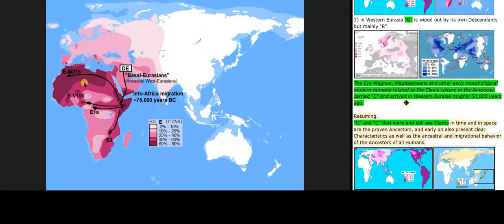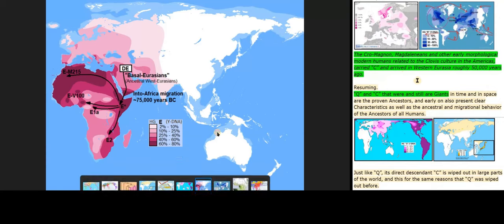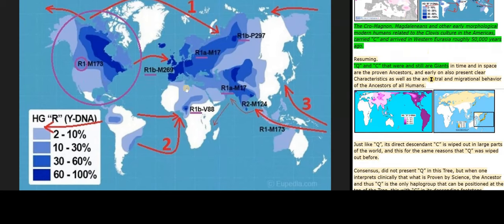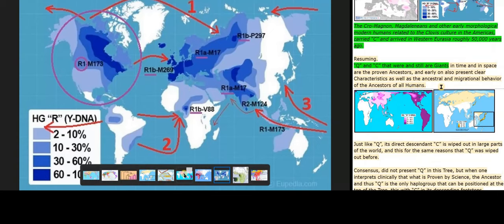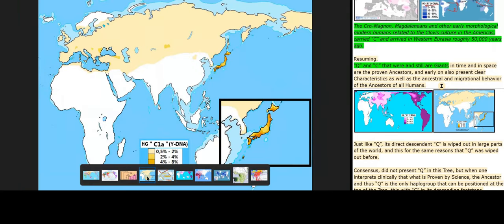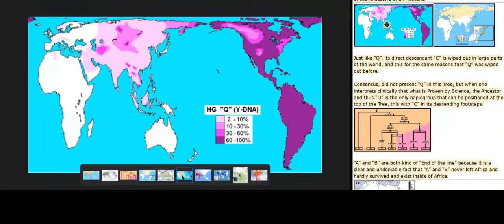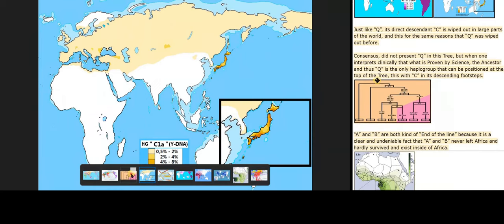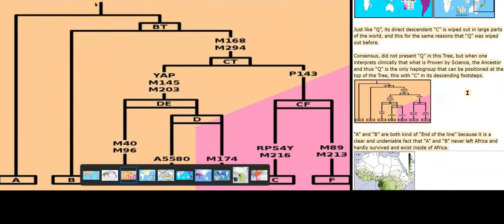The Cro-Magnon, Magdalenians and other early morphological modern humans related to the Clovis culture in the Americas carried C and arrived in Western Eurasia roughly 50,000 years ago. Resuming: Q and C, that were and still are giants in time and in space, are the proven ancestors, and early on also present clear characteristics as well as the ancestral and migrational behavior of the ancestors of all humans. Just like Q, its direct descendancy is wiped out in large parts of the world for the same reasons that Q was wiped out before. Consensus did not present Q in this tree, but when one interprets clinically what is proven by science, the ancestor — and thus Q — is the only haplogroup that can be positioned at the top of the tree, with C in its descending footsteps.